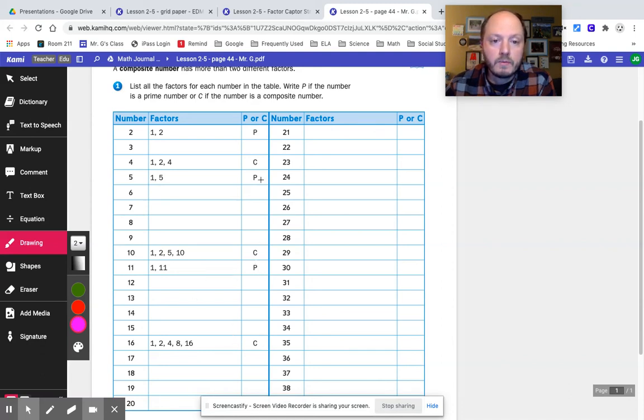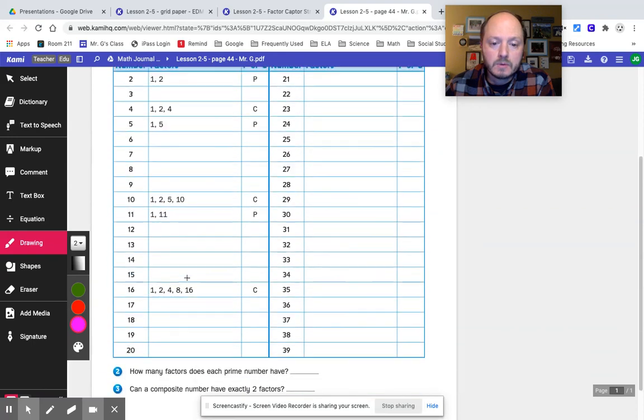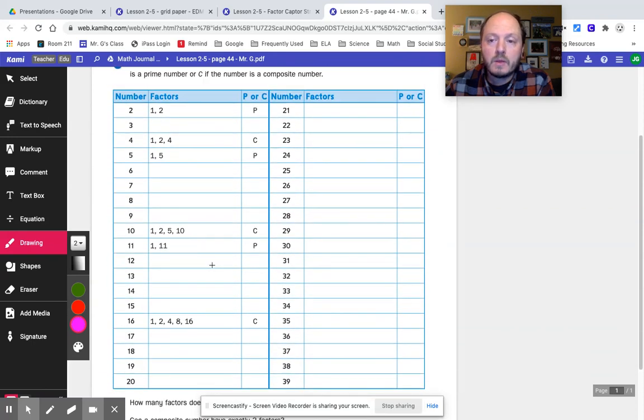We have 2 with just 1 and 2. So that makes it a prime number, right? And then we have 4. 1, 2, and 4. That makes it a composite number. So, P for prime, C for composite. And your job is to find the factors for these other numbers going all the way up to 39.